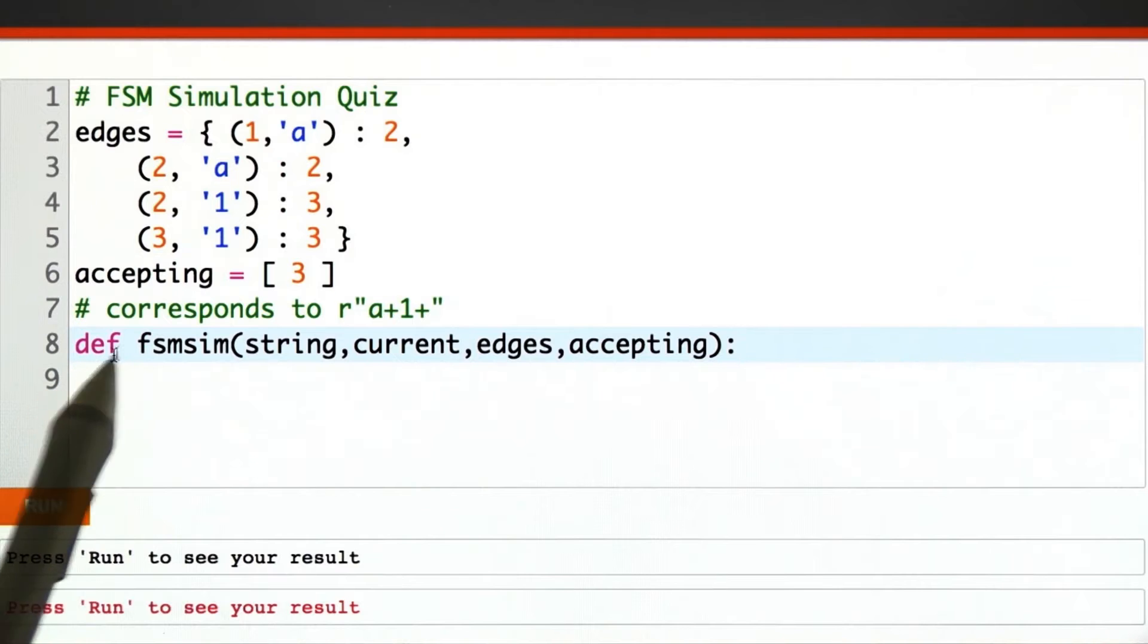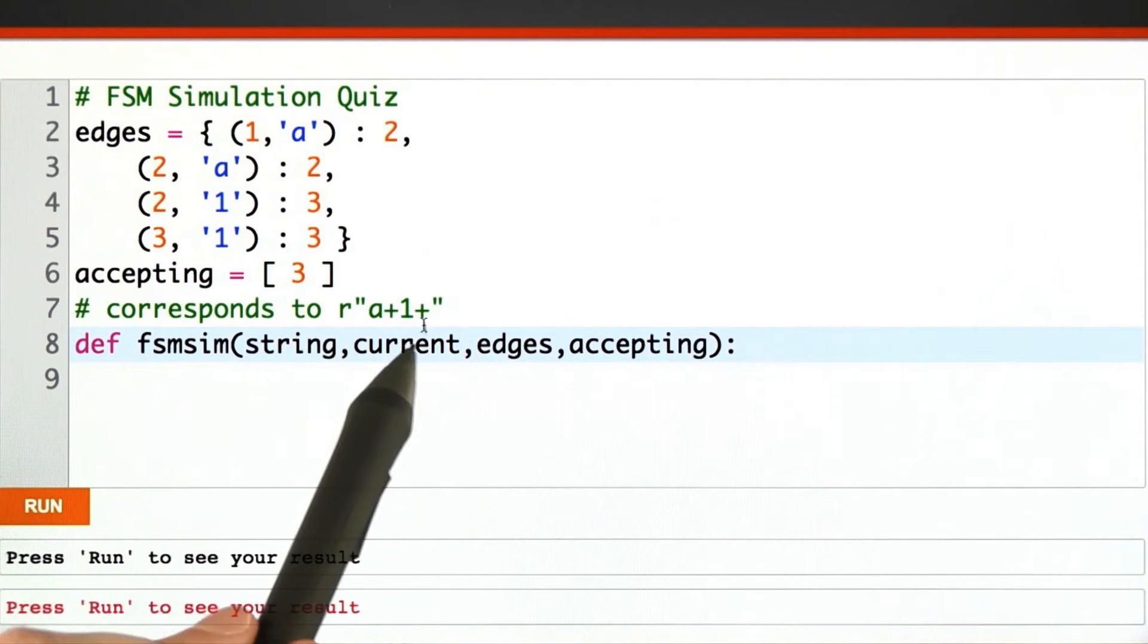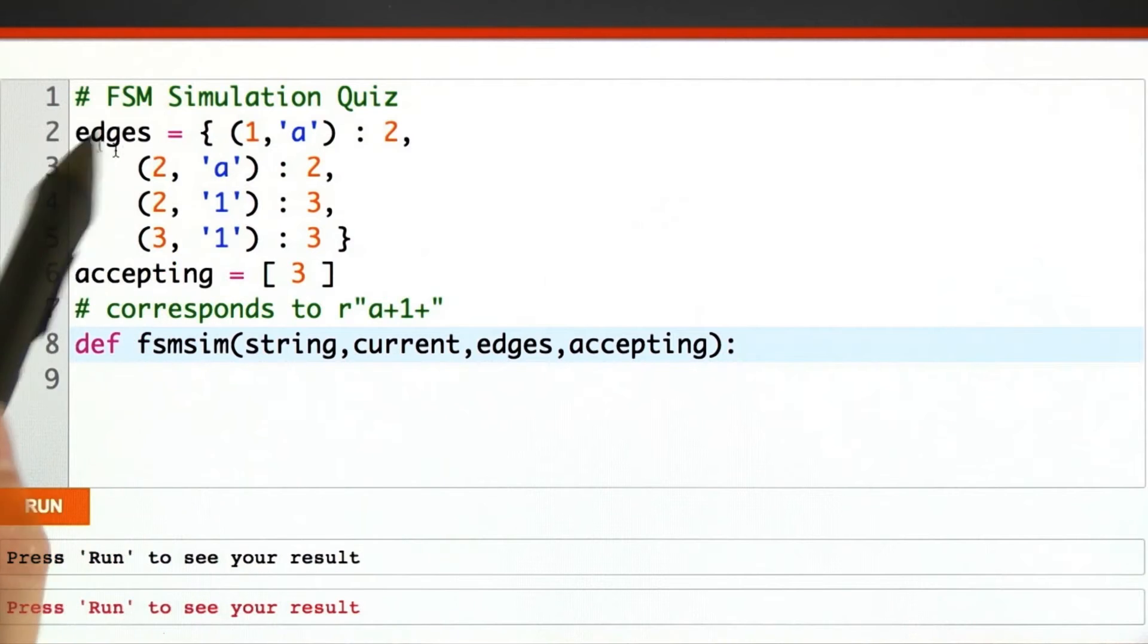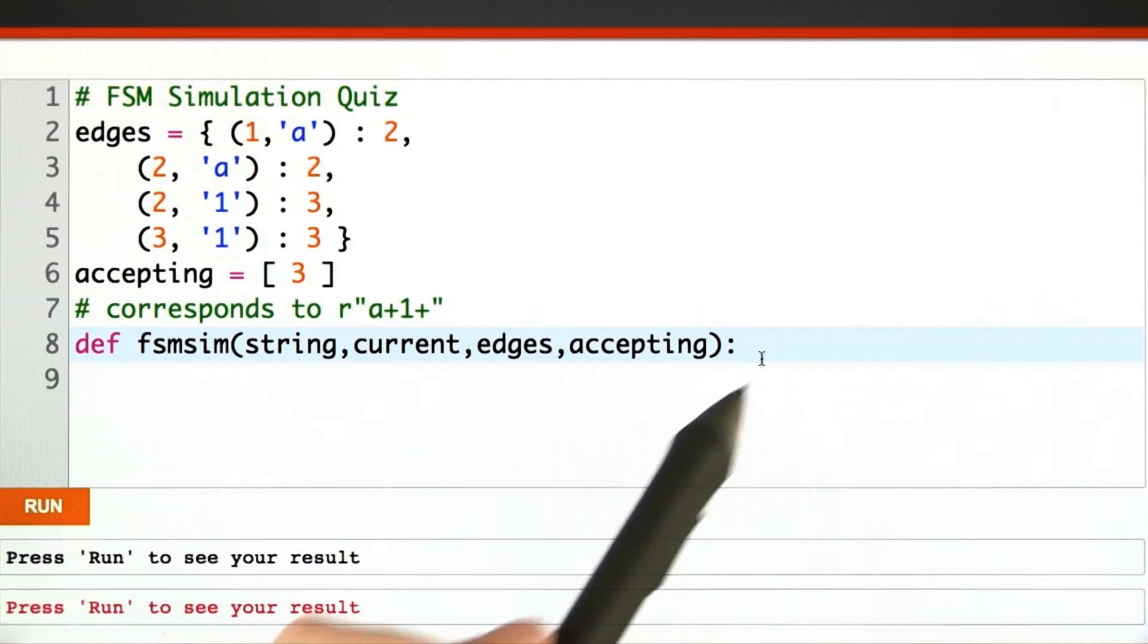And now we're going to define our procedure, finite state machine simulator, given a string, the current state, the edges, these ones up here, and the accepting state. What do we do?